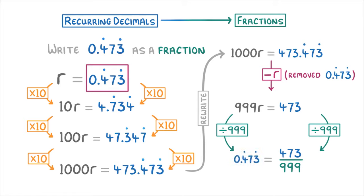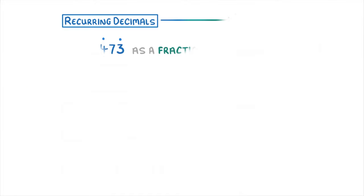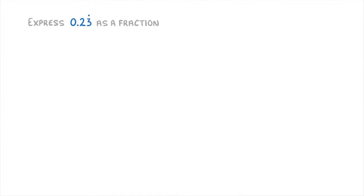And remember because r is the letter that represents 0.473 recurring, we're really writing 0.473 recurring is equal to 473 over 999. And so that's our answer, we've converted that recurring decimal into a fraction. We just had to go through all these weird steps to get here.